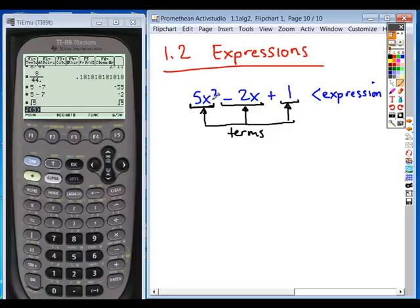So something like this, 5x squared, can be thought of as being added to negative 2x, added to positive 1. And the sign carries along with your terms.